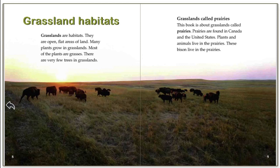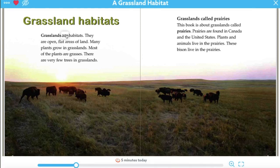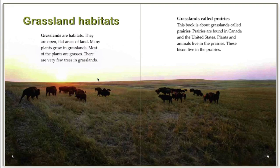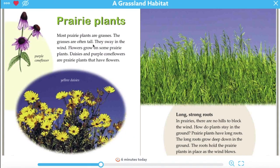Let's look back at the book. It says grasslands are habitats. They are open, flat areas of land. Many plants grow in grasslands. Most of the plants are grasses. There are very few trees in grasslands. So maybe I would draw a big field with lots of grasses, not very many trees. And they're talking about prairie plants - most of the prairie plants are grasses, and they're tall. So maybe I need to make them tall and long.